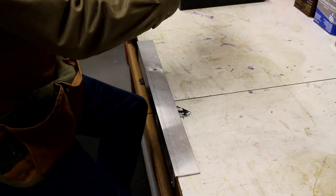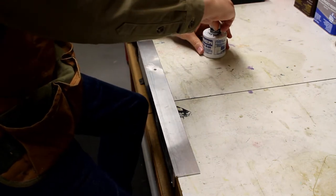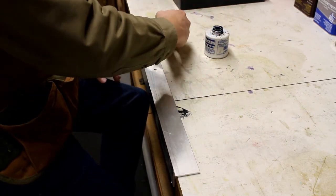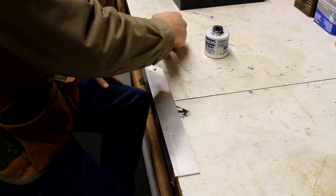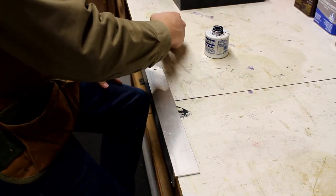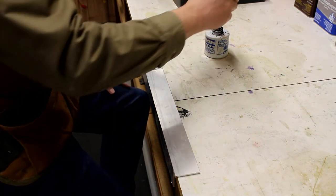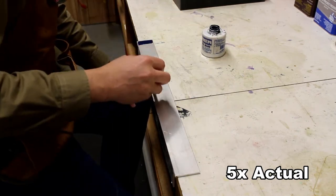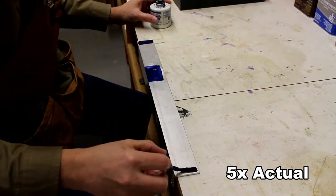So I'm going to be using Dikem Steel Blue to mark the aluminum so that I can mark my drilling points. One of the things I didn't show you was how I actually did the layout and marking of the aluminum,